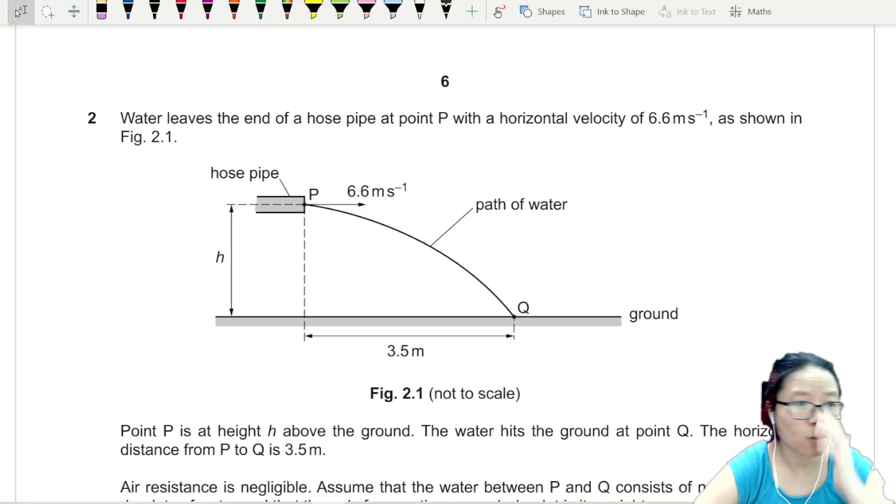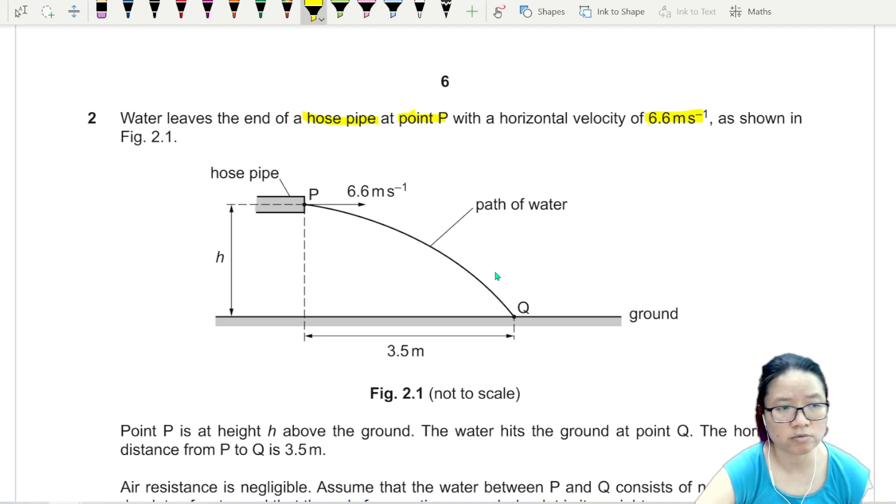Question 2. Water leaves the end of a hose pipe at point P with a horizontal velocity of 6.6 meters per second. Point P is height h above the ground. Water hits the ground at Q and the horizontal distance from P to Q is 3.5 meters.